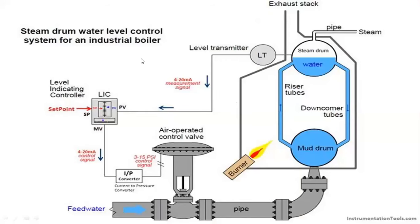Steam drum water level control in an industrial boiler is the most common control system. The top drum is the steam drum, the bottom one is the mud drum, with a burner at the furnace portion. A level transmitter sends a signal in the form of 4 to 20 milliamps to a level indicating controller, which senses the set point. The difference between the incoming signal and the set point is given back to the I/P converter, where the current signal is converted to pressure in the form of 3 to 15 PSI, given to the diaphragm of the air-operated flow control valve, which controls the feed water going into the steam drum.